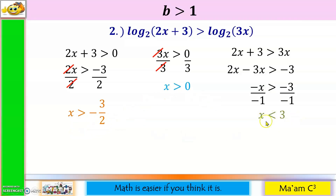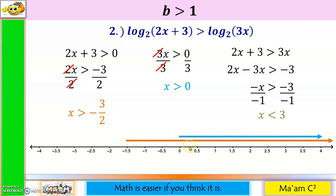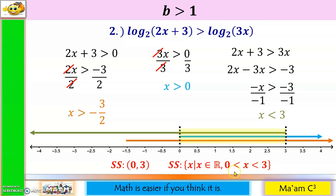So this time we have three conditions. Let us plot them on a number line. Starting with x > −3/2, which is −1.5, going to the right. Then x > 0, going to the right. And x < 3, going to the left. We determine the intersection of these three graphs — that is our solution set. The intersection is from 0 to 3. Both are in parentheses because there is no 'or equal to.' In set-builder notation: x is greater than 0 but less than 3.